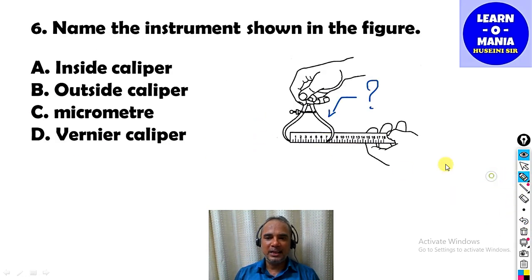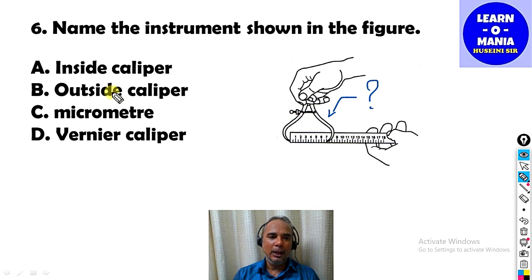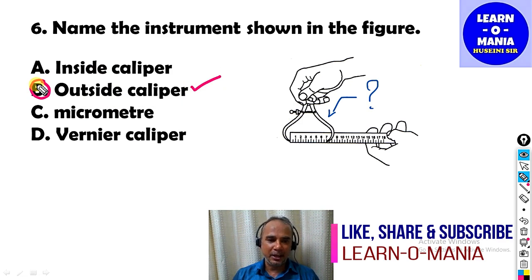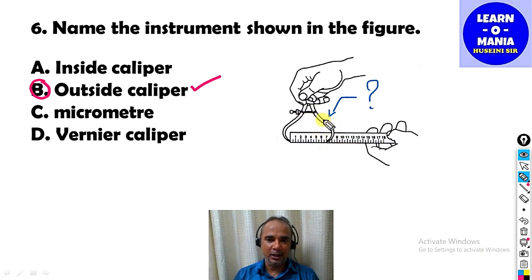Our next MCQ: Name the instrument shown in the figure. What is this instrument called? For any round job, the outside diameter is measured using this — it is called outside caliper.